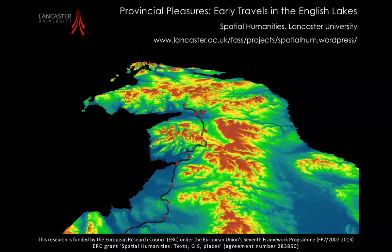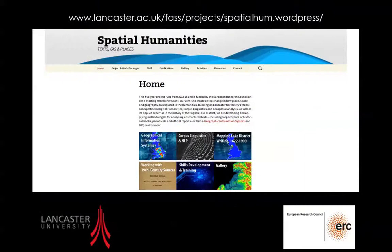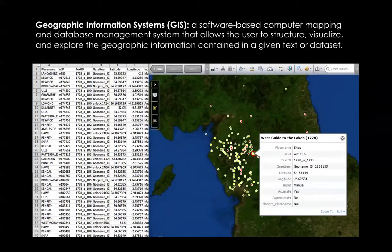Spatial Humanities is a five-year European Research Council-funded project whose main ambition is to investigate how digital tools developed in the fields of geography and corpus linguistics can be adapted to enrich the study of history, literature, and the arts. Primarily, our work focuses on developing techniques for analyzing large collections of books, newspapers, and official reports within a Geographic Information Systems environment.